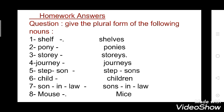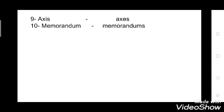Eighth: 'mouse' becomes 'mice'. In the rule it was stated that there are few nouns that change vowels. The vowels are A, E, I, O, U. Here the vowels O and U change, so it becomes 'mice'. Ninth: 'axis' — its plural is 'axes'. This is a Latin word so it changes according to Latin rules. Tenth: 'memorandum' — also a Latin word, and it changes by adding 'a' to become 'memoranda'.